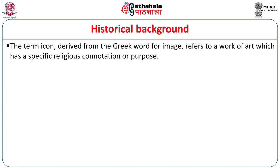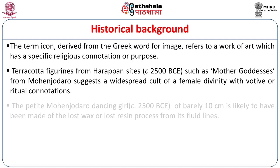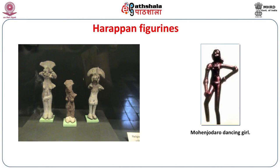To delve into the historical background, the term icon is derived from the Greek word for an image and refers to a work of art which has a specific religious connotation or purpose. Going back to the Harappan sites of 2500 BC, there are numerous terracotta figurines broadly labeled as mother goddess images, such as from Mohenjo-daro, suggesting a widespread cult of perhaps a female divinity with votive or ritual connotations. A celebrated metal figurine is the petite Mohenjo-daro dancing girl of circa 2500 BCE, likely made by the lost wax or lost resin process from its fluid lines. You can see here images of the mother goddess figurines and the metal figurine of the dancing girl.